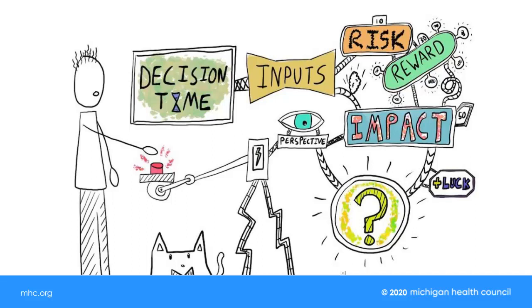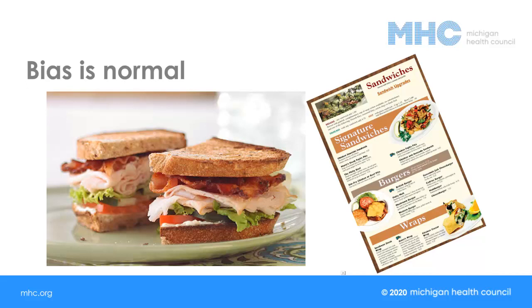Instead of sitting down and tediously analyzing all the different variables of a problem, regardless of the relevance or weighted importance of each element — if you're deciding what to have for lunch, you don't need to read the whole menu from cover to cover. You already know you want a cold sandwich, so you hop right to that section. You might enjoy trying something else, but you've only got a half an hour. You pick the sandwich you had last time. This bias is called the familiarity principle — it's a bias based on exposure.